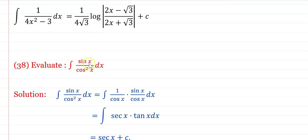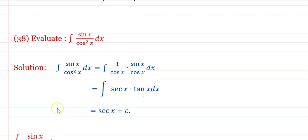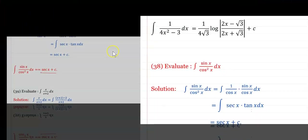Evaluate ∫sin x / cos²x dx. Rewrite as ∫(1/cos x)·(sin x/cos x) dx = ∫sec x · tan x dx = sec x + C.